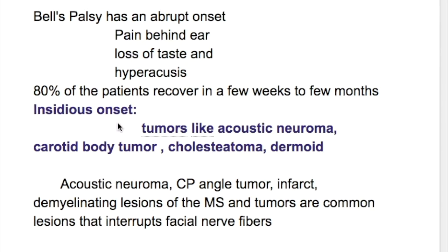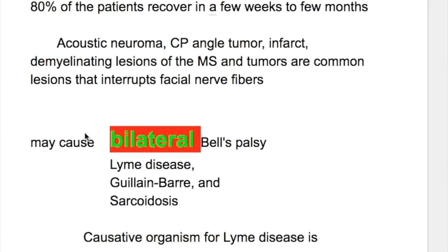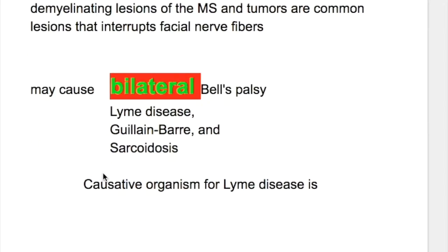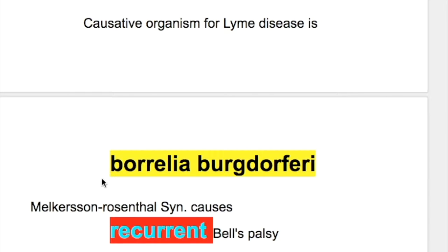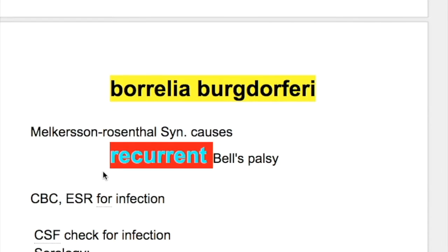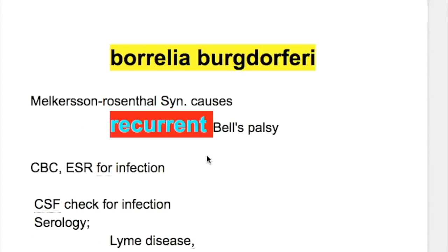Disorders that cause insidious onset Bell's palsy include tumors such as acoustic neuroma, carotid body tumor, cholesteatoma, and dermoid. Disorders that may cause bilateral Bell's palsy include Lyme disease, Guillain-Barré syndrome, and sarcoidosis. The causative organism for Lyme disease is Borrelia burgdorferi. The disorder that causes recurrent Bell's palsy is Melkersson-Rosenthal syndrome.